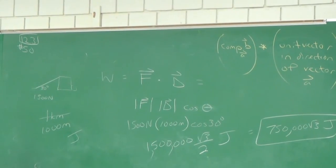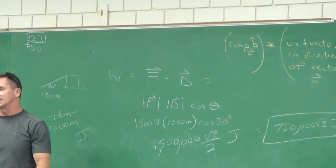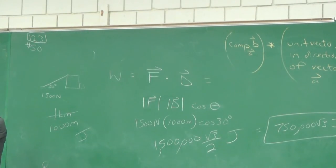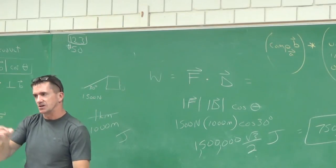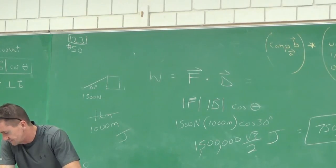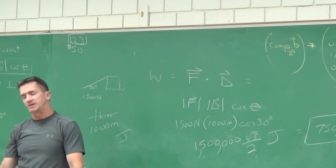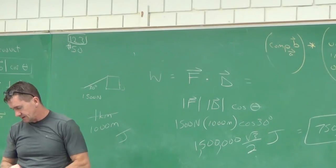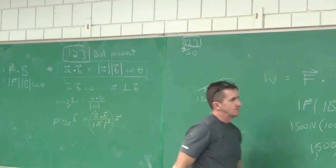These problems are easier than Calc 2. In Calc 2 work problems, we did the rope, the spring, the circular swimming pool — and tomorrow I still have to do the triangular trough and the spherical tank, because everything changes in terms of those slices we have to sum up. But with this dot product approach, it's much simpler. Now it's time to enter 12.4.